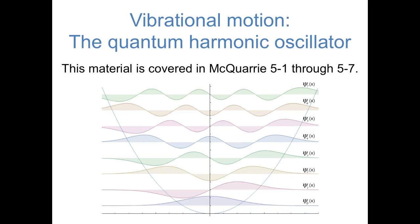Hi, everybody. We've spent the three previous videos covering our first model system in quantum mechanics, the particle in a box. In this video, we'll move on to our next model system, the quantum harmonic oscillator.